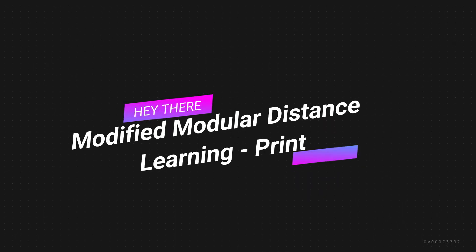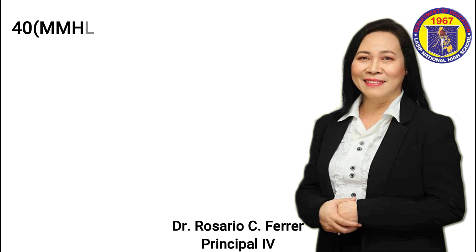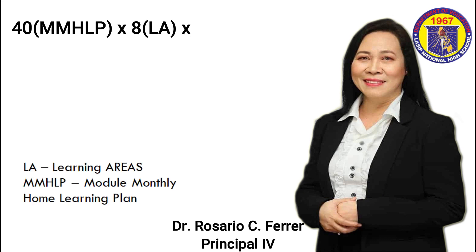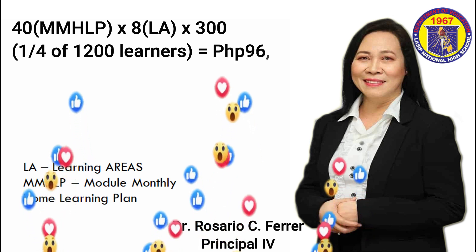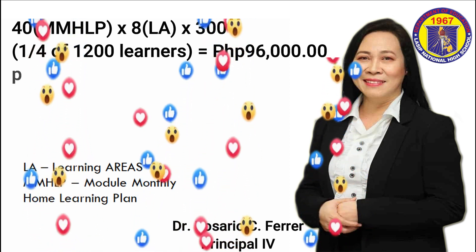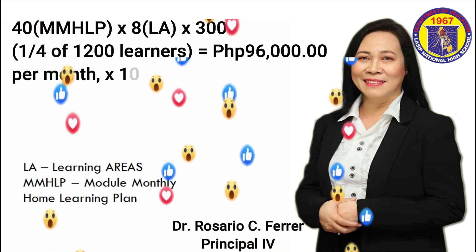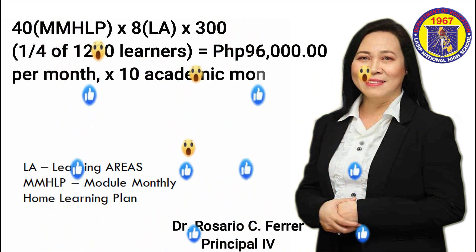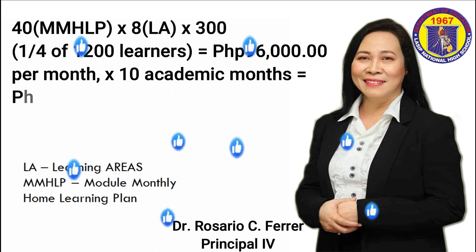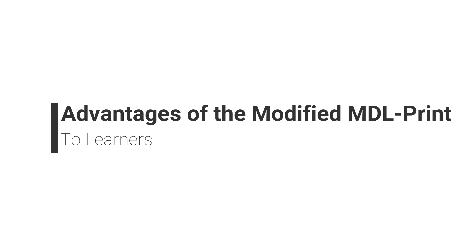But with a modified MDL print as we are presenting, for example: 40-page MMHLP times 8 learning areas times 300 learners — one-fourth of the 1,200 learners — equals 96,000 pesos per month, times 10 academic months, equals 960,000 pesos only. These are the advantages of the modified MDL print to our learners.